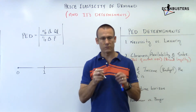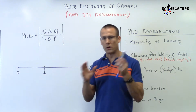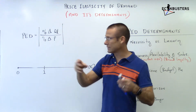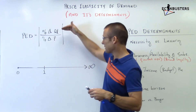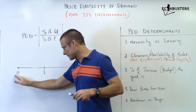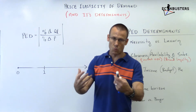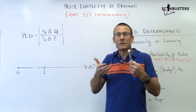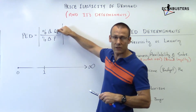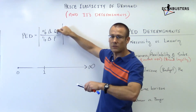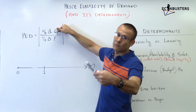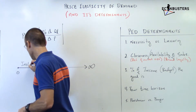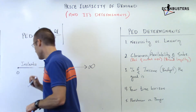On a number line from zero to infinity, what happens if the value is between zero and one? That means the percent change in QD was less than the percent change in price — this is smaller than this. If that's the case, we're going to say we are relatively inelastic. The dependent variable is not that responsive to price changes, so zero to one is inelastic.